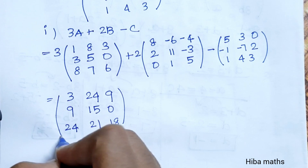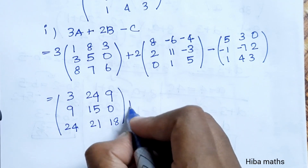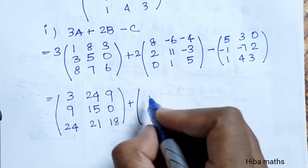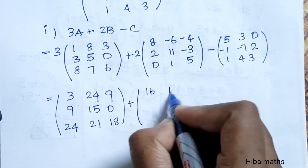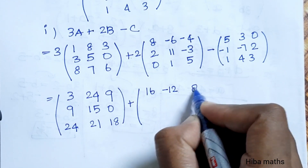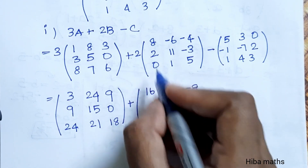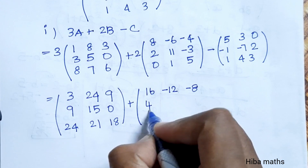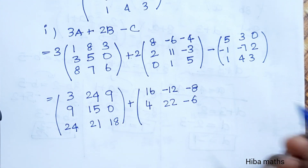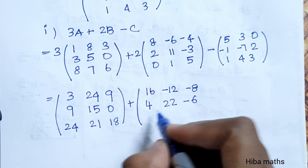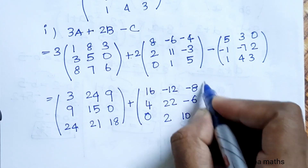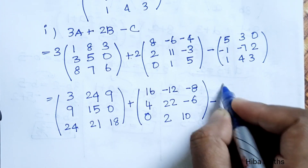Computing 3A and 2B: multiplying elements. 2 times 8 is 16, 2 times 6 is 12, minus 3 is -12 giving minus 34, 2 times 4 is 8, minus giving -34 minus 8. Then 2 times 2 is 4, 2 times 11 is 22, 2 times 3 is 6 giving minus 6. Then 2 times 0 is 0, 2 times 1 is 2, 2 times 5 is 10.